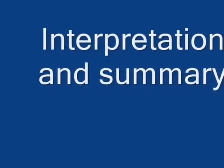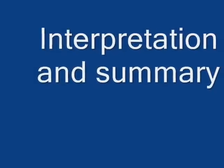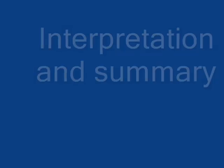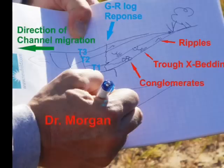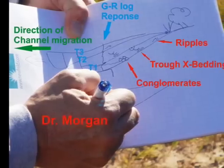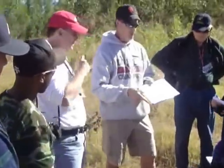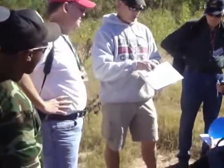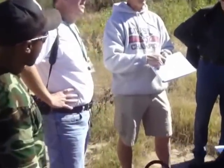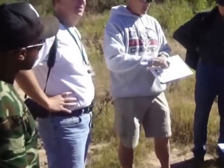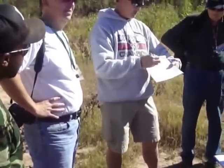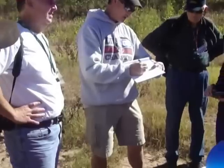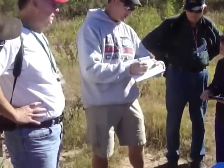If the river looks like this, you deposit here. Here's the cut bank. We've got here the active part of the river.